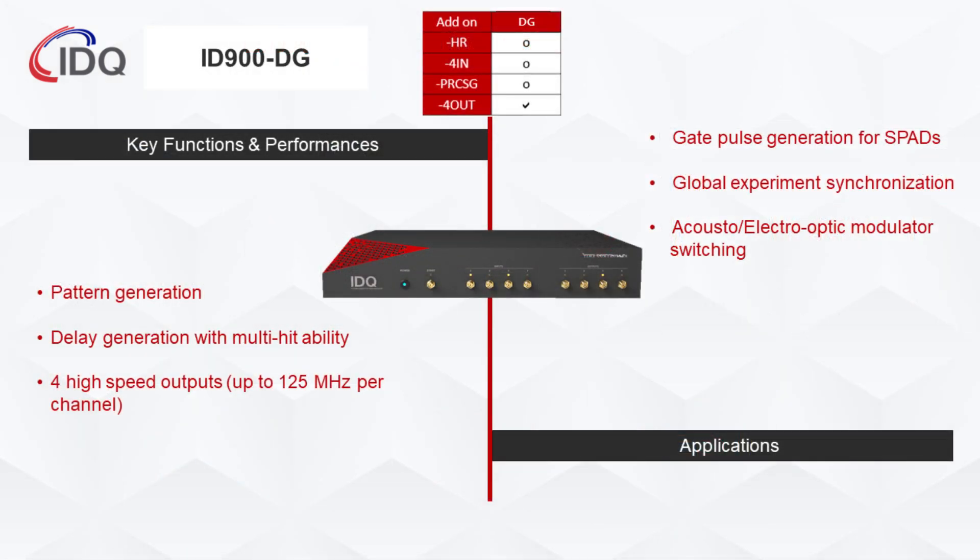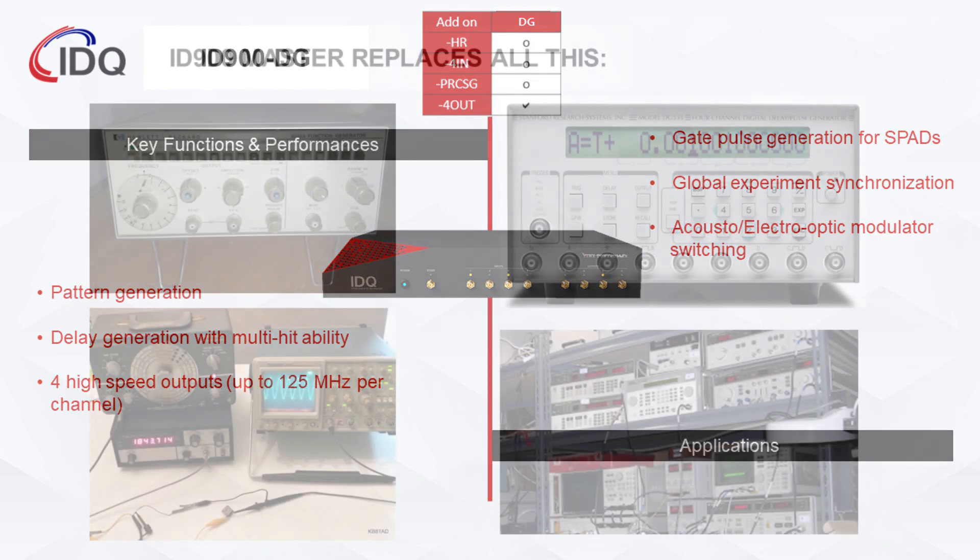Some users may prefer to use the ID900 solely as a function generator. Its four high-speed outputs are useful for global experiment synchronization, such as triggering your laser with defined pulses, while also generating gate pulses for gated SPADs such as the IDCube.